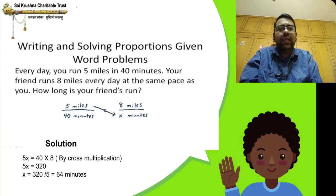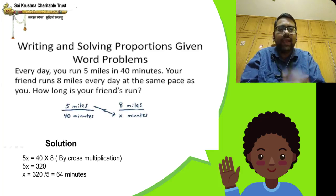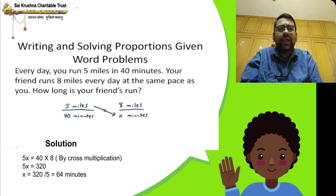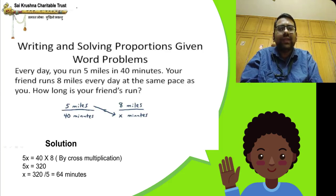Writing and solving proportions from word problems: Every day you run 5 miles in 40 minutes. Your friend runs 8 miles every day at the same pace. How long is your friend's run? Set up the proportion: 5 miles / 40 minutes = 8 miles / x minutes, where x is the unknown number of minutes.